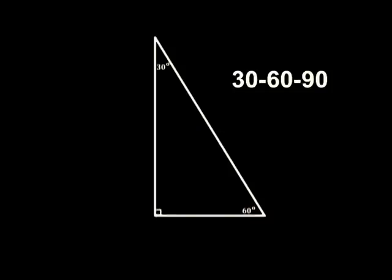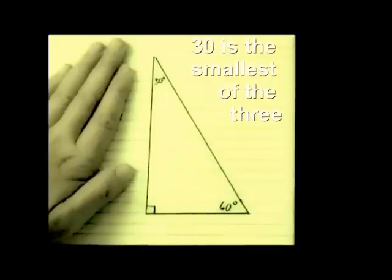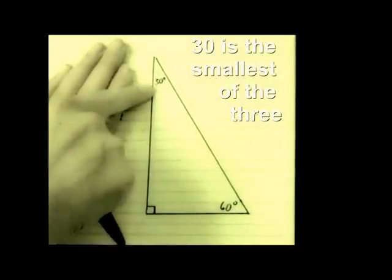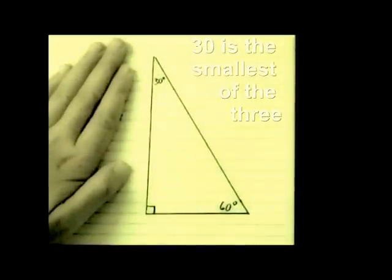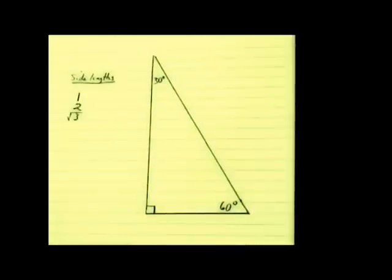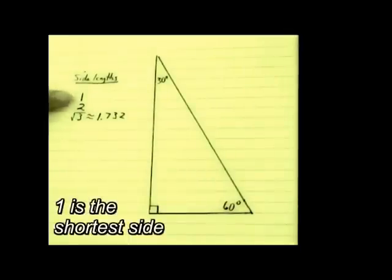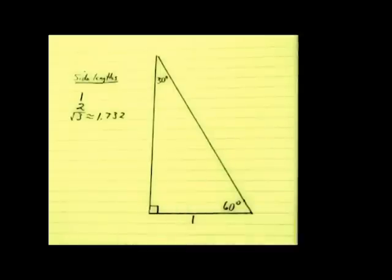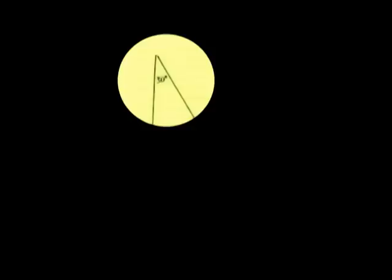30, 60, 90. 30 is the smallest of the three: 1, 2, root of 3. 1, 2, root of 3. 1 is the shortest side, so the 1 is opposite from the 30.